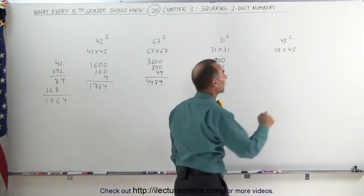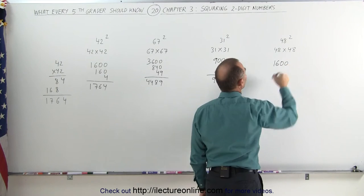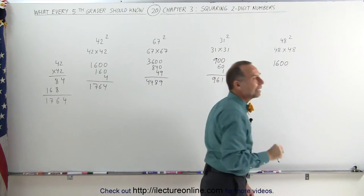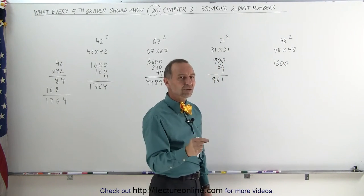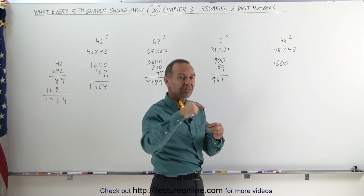How about 48 squared? Again, 4 times 4 is 16. Add two zeros, you get 1600. 4 times 8 is 32. Add a zero, that's 320. Double 320, you double each number, that's 640.